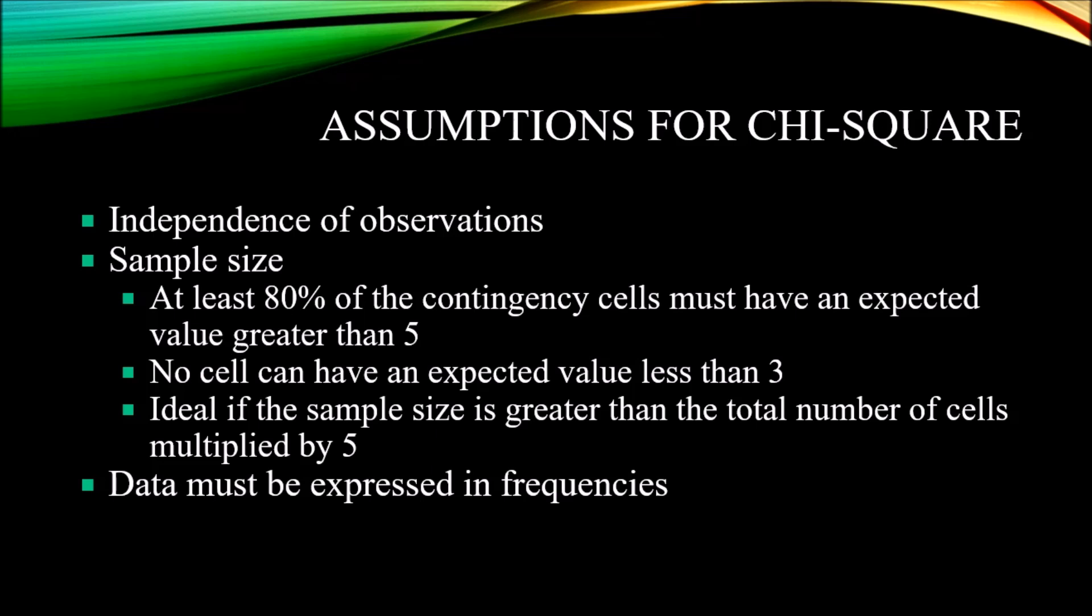The sample size for a chi-square is governed by a few rules. At least 80% of the contingency cells must have an expected value greater than 5. That expected value is calculated by taking the row total for any particular cell, the column total for that same cell, multiplying those two values and dividing by the sample size, the total sample size—all the counts from every cell added together.